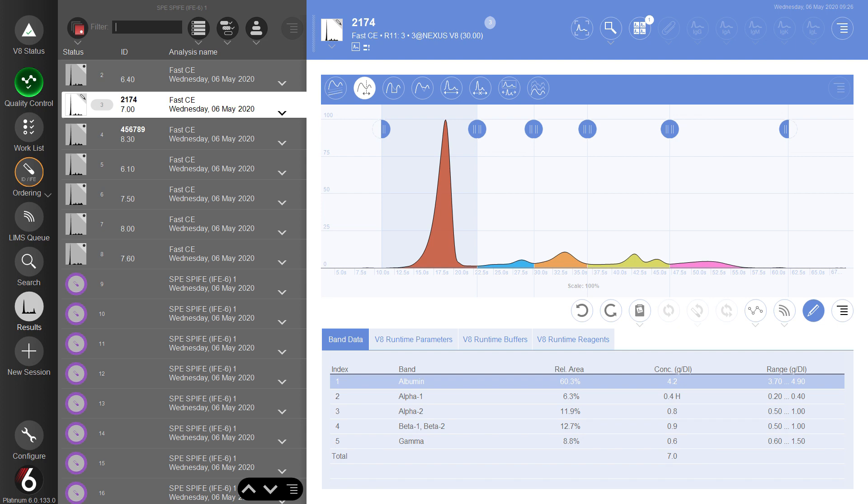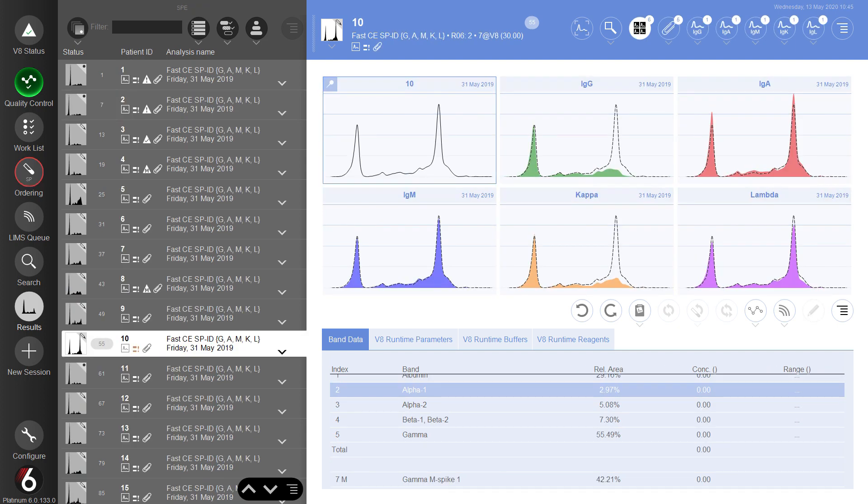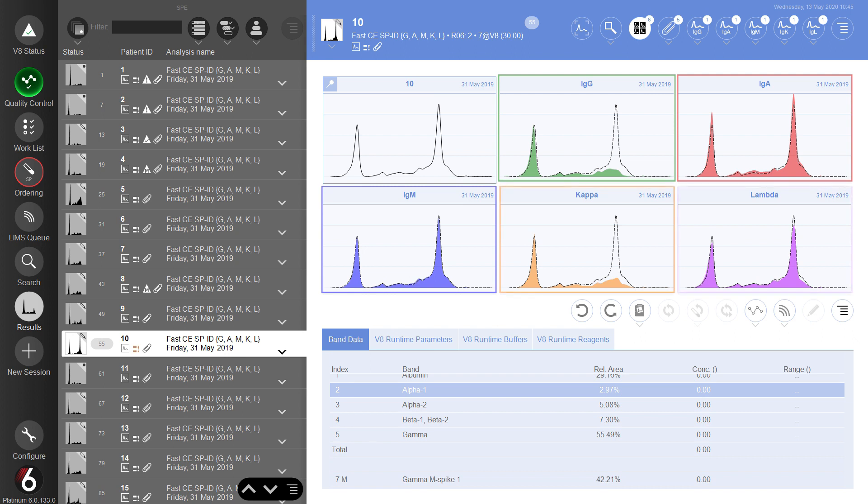In place of IFE, capillary electrophoresis uses immunosubtraction, which is referred to as immunodisplacement on the Nexus. You can run a full profile of SP, G, A, M, Kappa, and Lambda, or screen for just Kappa and Lambda, or any combination you wish.